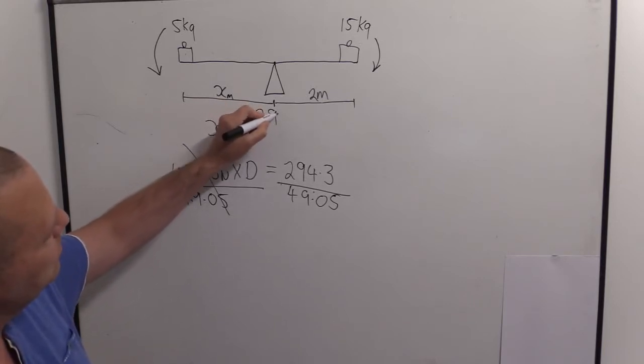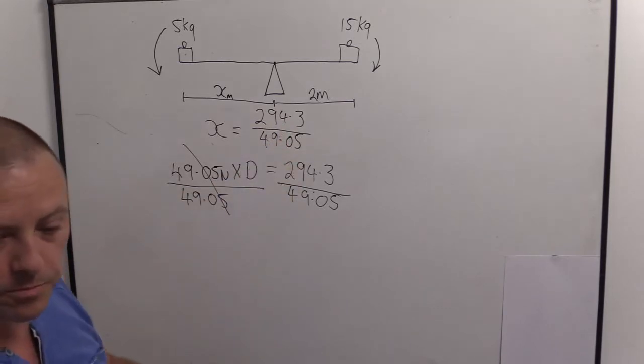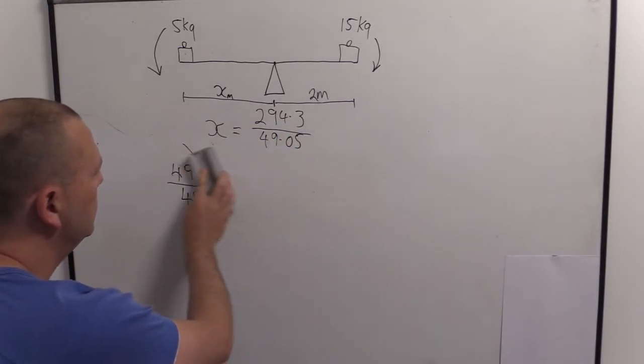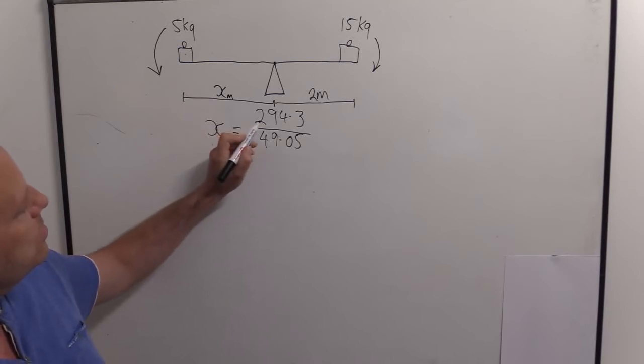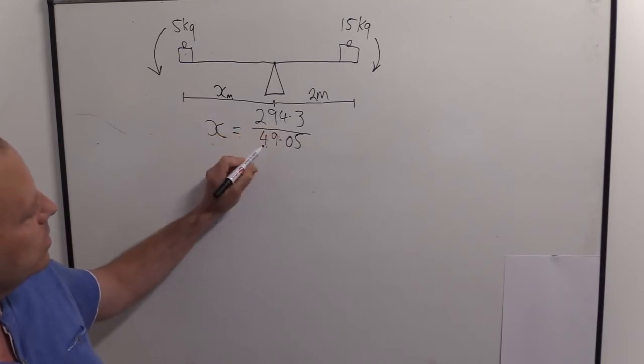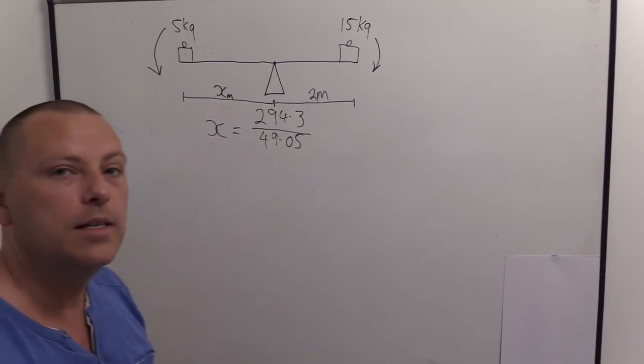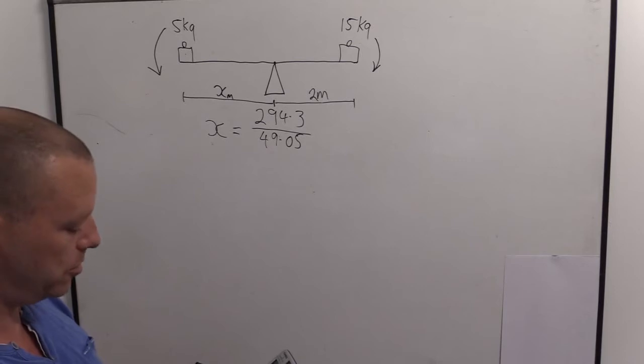So I hope you can follow what I'm doing. 49.05, so d is x, x is d. Okay, trying to find this distance. So this distance is going to be equal to 294.3 divided by 49.05. Let's see what it is. 294.3, 49.05.